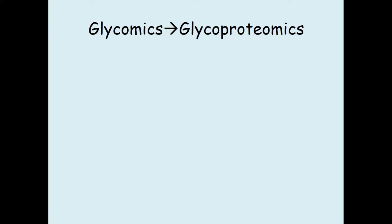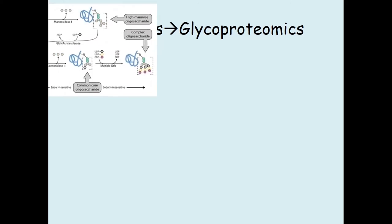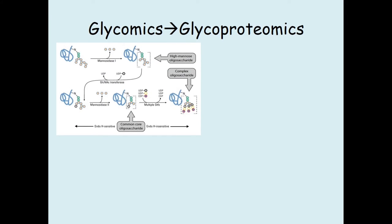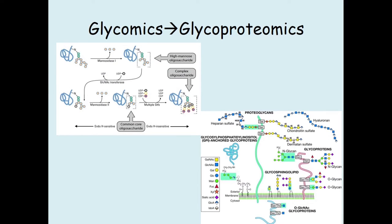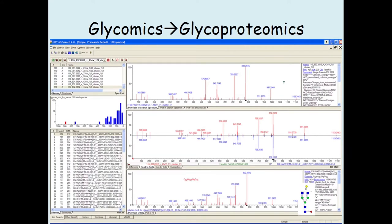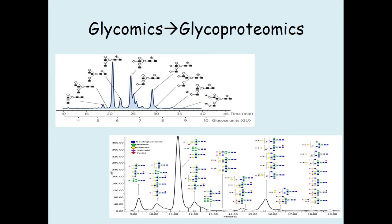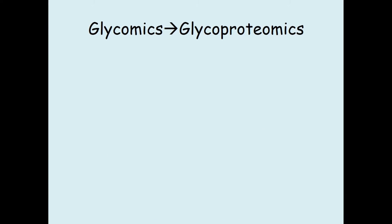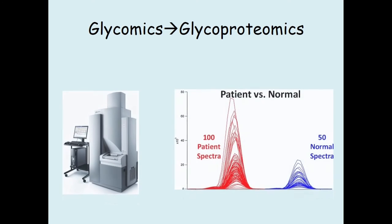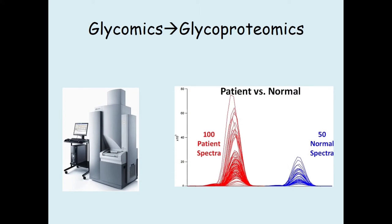Glycoproteomics is the study of glycomes attached to their proteins. It is the branch of proteomics that identifies, catalogues, and characterizes proteins containing carbohydrates as a post-translational modification. Glycoproteomics also studies the change or modification of proteins which are associated with disease, using the combination of conventional glycan analysis through MALDI-TOF-TOF and glycopeptide analysis through LC-MALDI-TOF-TOF.